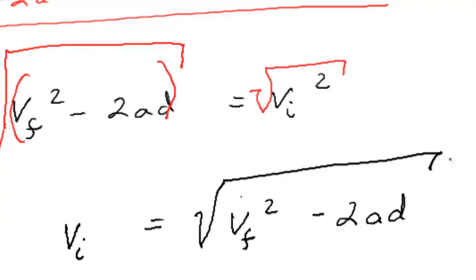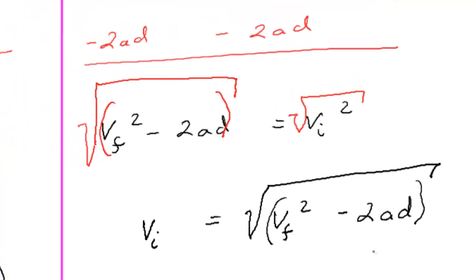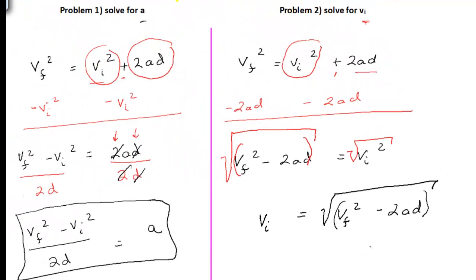We have VI equals the square root of VF squared minus 2AD. And again, that square root is for this entire quantity, not just for VF squared. And that is the correct solution.